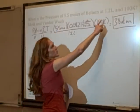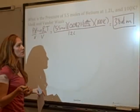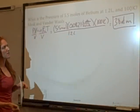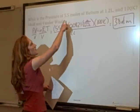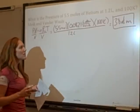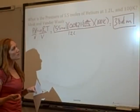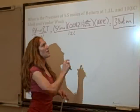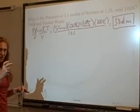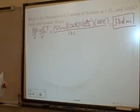Right away we can tell this is likely not ideal. One mole of gas occupies 22.4 liters at standard conditions, so 5.5 moles should occupy closer to 40 liters at standard pressure. But here we only have 1.2 liters — this is a very concentrated, highly compressed gas. With so many moles in such a small volume, it's probably not going to behave ideally.